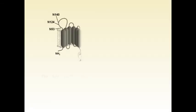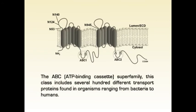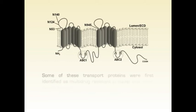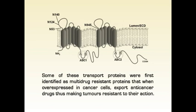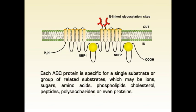The final class of ATP-powered pumps is a large, diverse family referred to as the ABC (ATP-binding cassette) superfamily. This class includes several hundred different transport proteins found in organisms ranging from bacteria to humans. Some of these transport proteins were first identified as multi-drug resistance proteins that, when overexpressed in cancer cells, export anti-cancer drugs, making tumors resistant to their action. Each ABC protein is specific for a single substrate or group of related substrates, which may be ions, sugars, amino acids, phospholipids, cholesterol, peptides, polysaccharides, or even proteins.